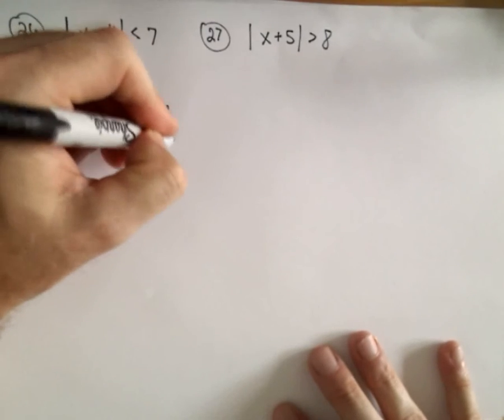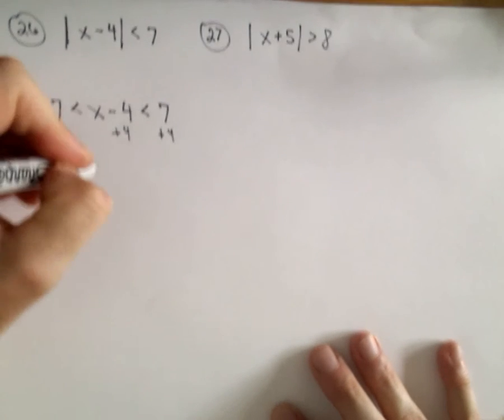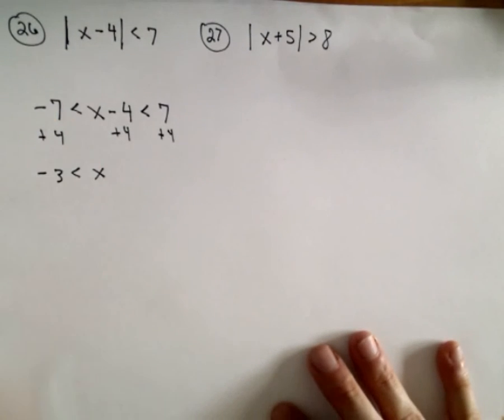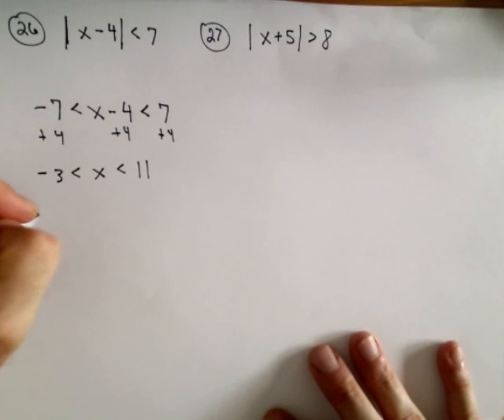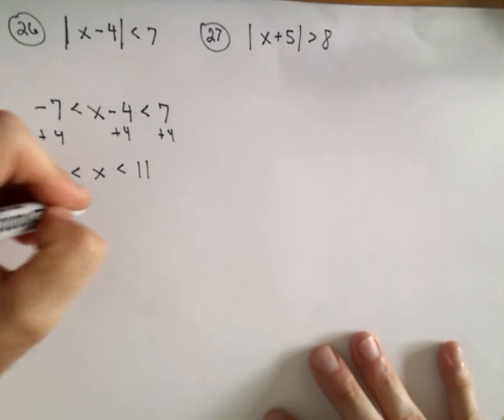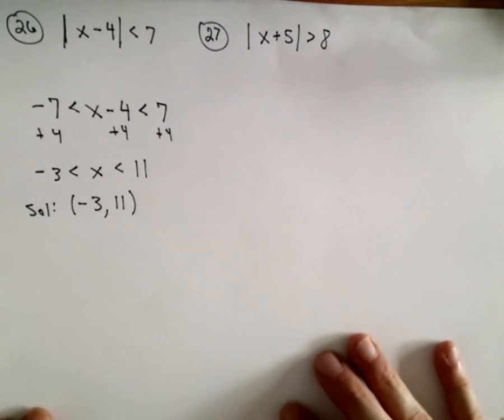We just add 4 to both sides, or I should say all sides. So negative 7 plus 4 will be negative 3. We still have our x left over in the middle. Then we have positive 11 on the right side, so that'll be the solution set. We've got from negative 3 up to positive 11, with parentheses on both of those.